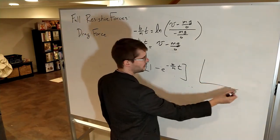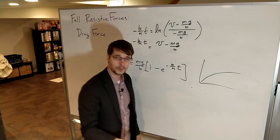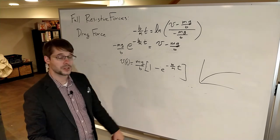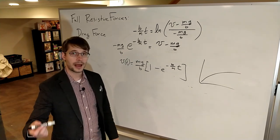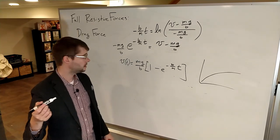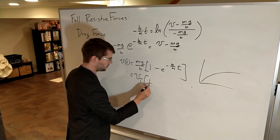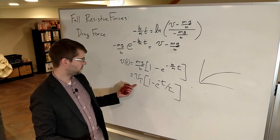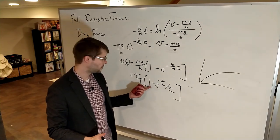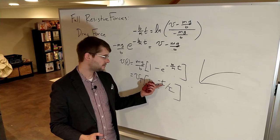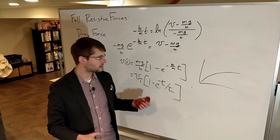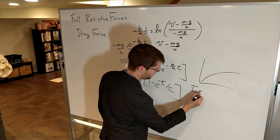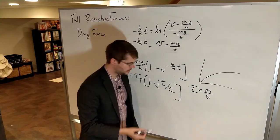If you graph this, you'll see something that asymptotically approaches a single value — that value is mg over b, which was our terminal velocity. The equation can be written as v = v_T times (1 minus e to the negative t over tau), where tau is the time constant equal to m over b, in units of seconds.